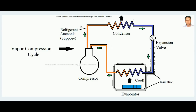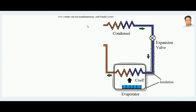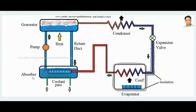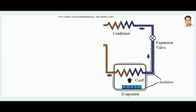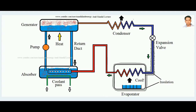From the vapor compression cycle, the compressor part is removed. In this vapor absorption system based on aqua ammonia, instead of a compressor there is a generator-absorber system. In the absorber, ammonia coming from the evaporator mixes with cold water — since ammonia is highly soluble in cold water it dissolves, forming what is called a strong solution.